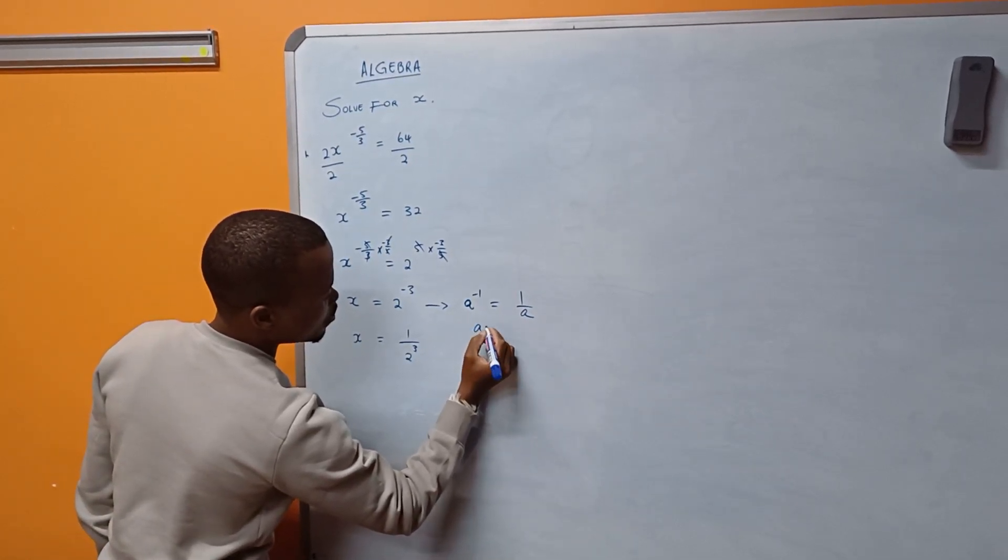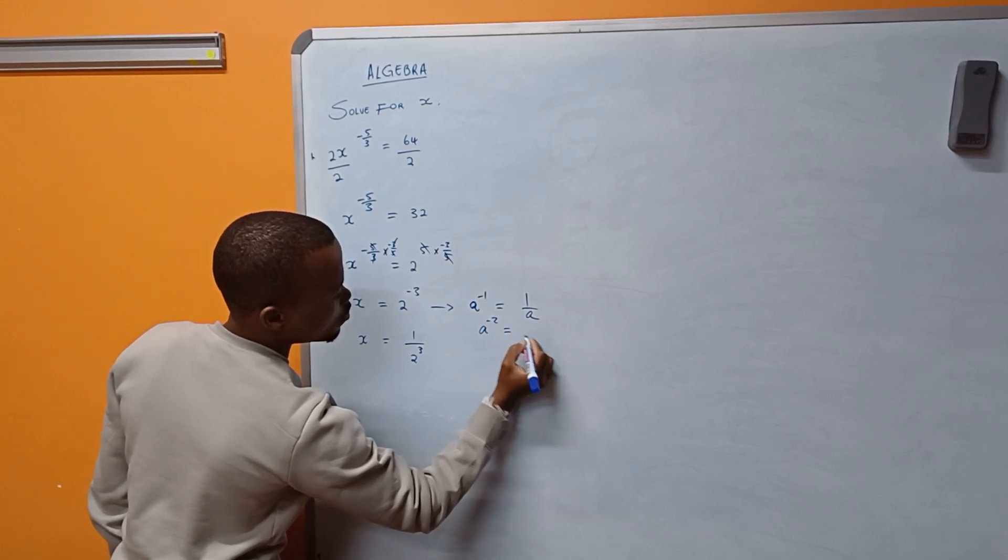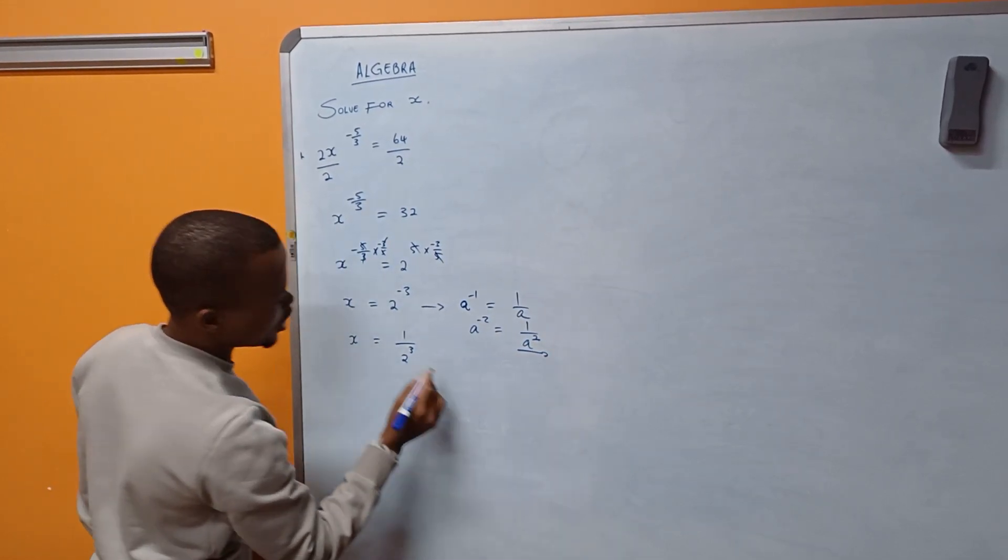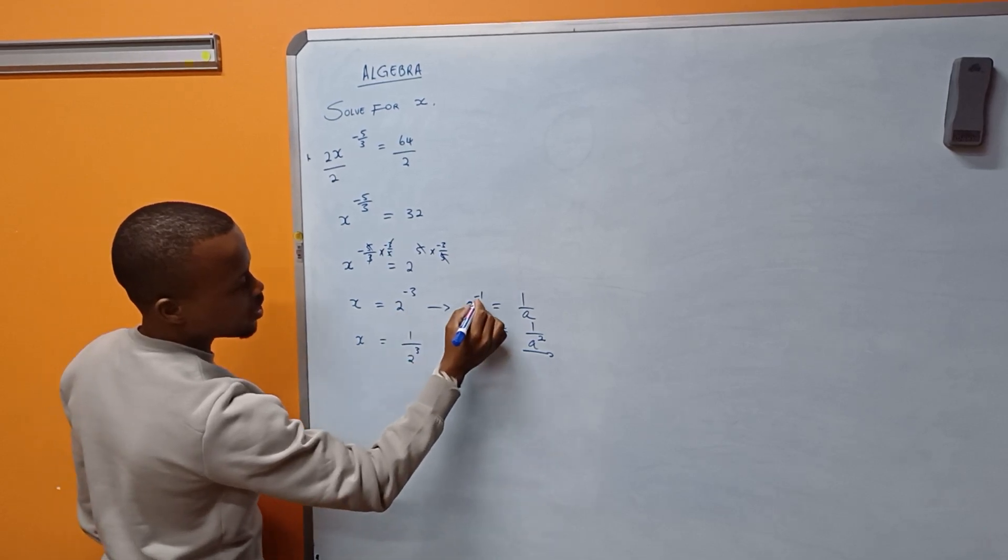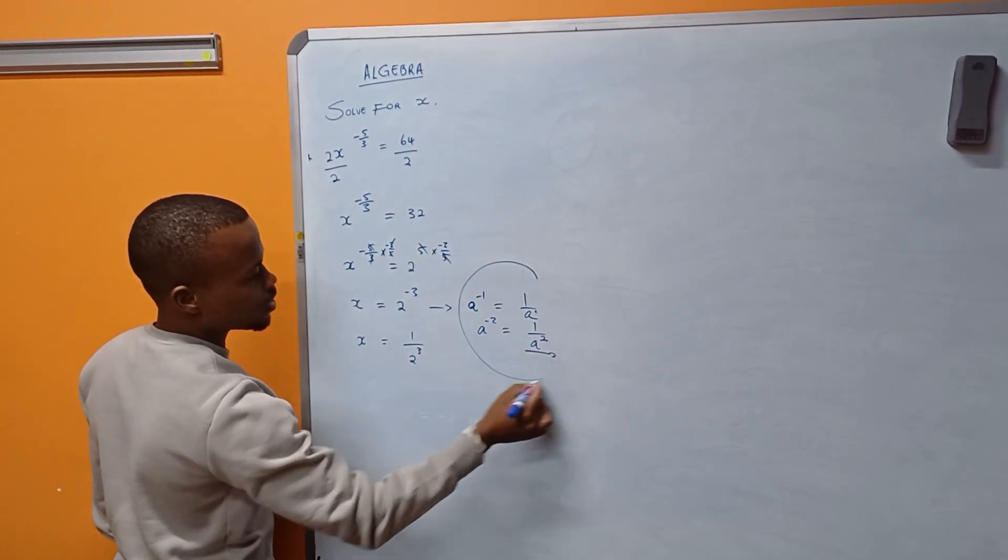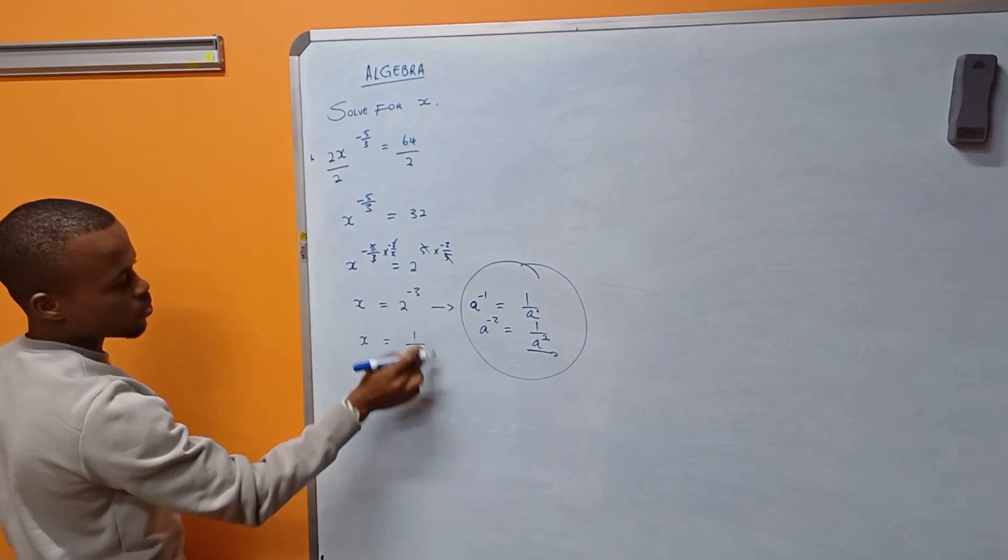Similarly, if you have alpha to the power of minus 2, it would equal 1 over alpha to the power of 2. I just want to emphasize this first because here there was 1 and 1 is still here. This is what I wanted to emphasize. This is what I used here.